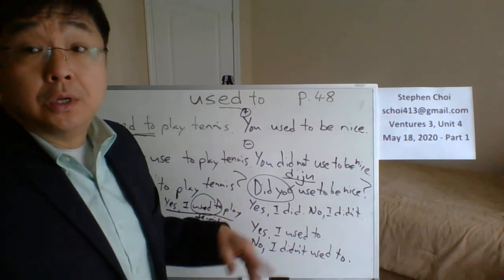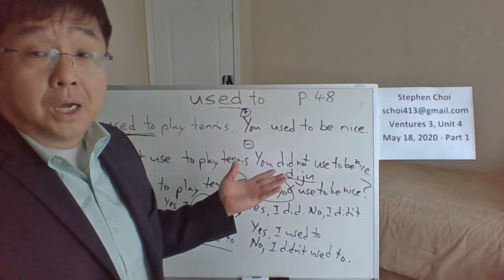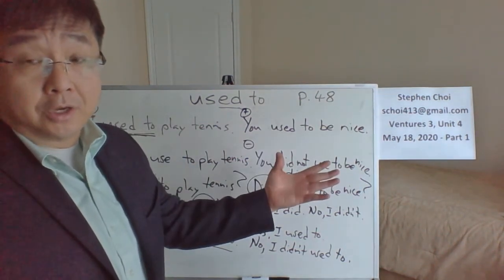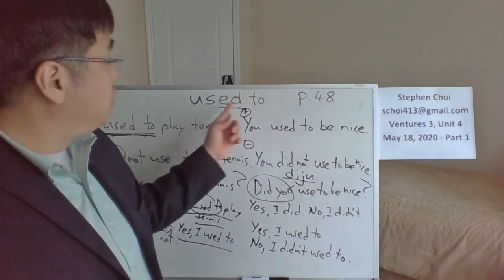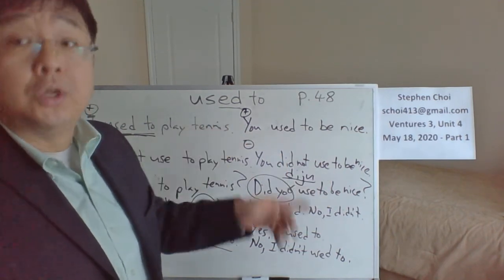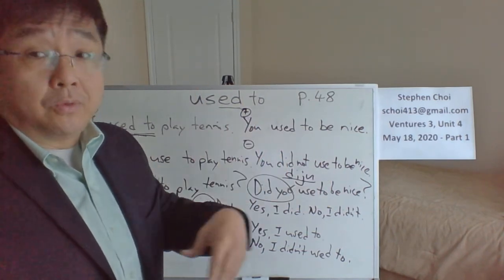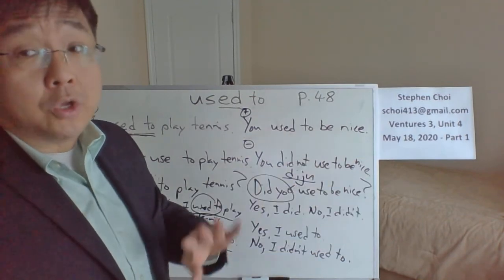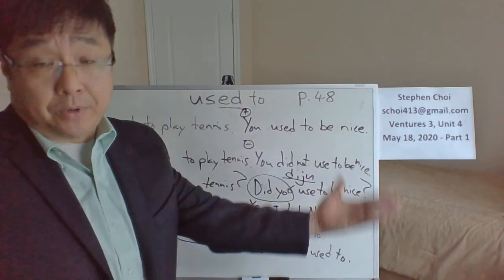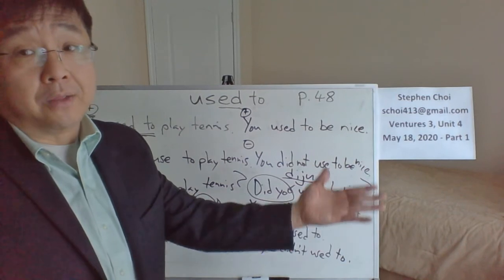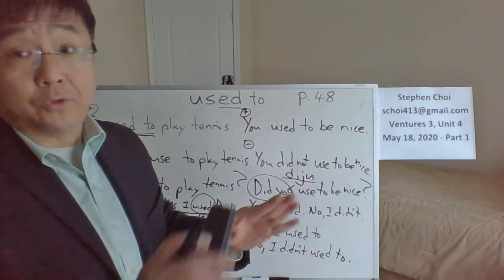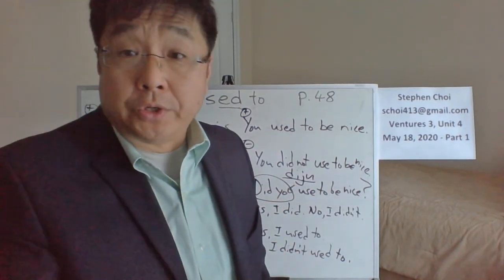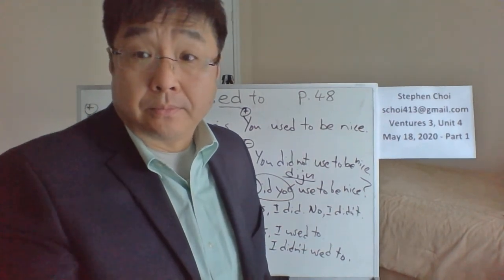So basically, 'used to' is different from regular past tense. When you use 'used to,' you get two pieces of information: what happened in the past and what's happening now. When you don't use 'used to,' you just know what happened in the past — for the present, we have no idea. We'll see you in the next video. Bye.